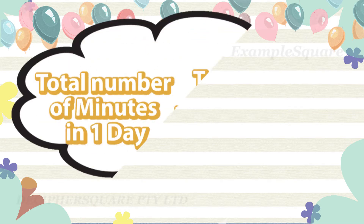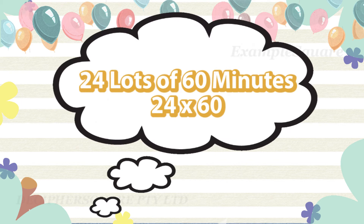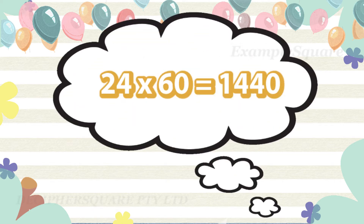The total number of minutes in a day equals the total number of minutes in 24 hours. Since every hour has 60 minutes, it's 24 lots of 60 minutes — that is 24 times 60, which equals 1440 minutes.